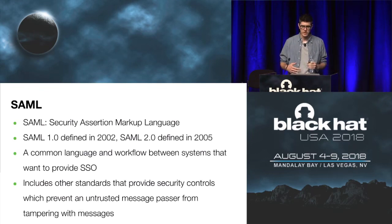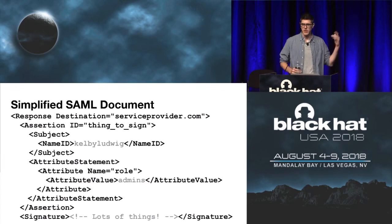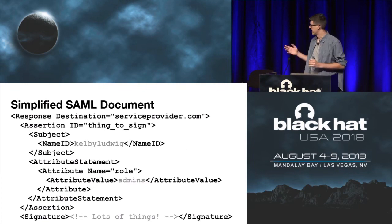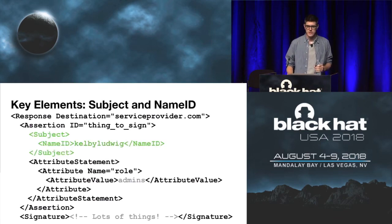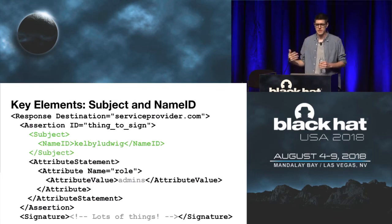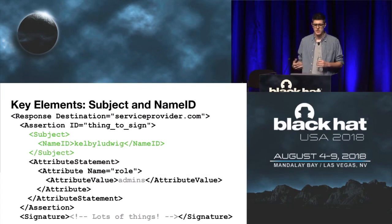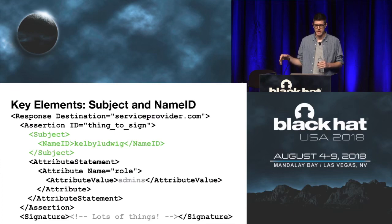I think everyone would probably hate me if I put a real SAML document up here, so this is a very simplified example. SAML documents are just XML, and XML can get relatively nasty, so this has a lot of the cruft removed. I'd like to highlight a few key elements relevant to this talk. The first is the subject and the name ID elements. The subject element conveys information about the authenticating user. The name ID is part of the subject element and is defined as a string value that uniquely identifies a user — commonly things like email addresses or usernames. SPs very often use this name ID to identify what user they want to authenticate when they receive a SAML message.